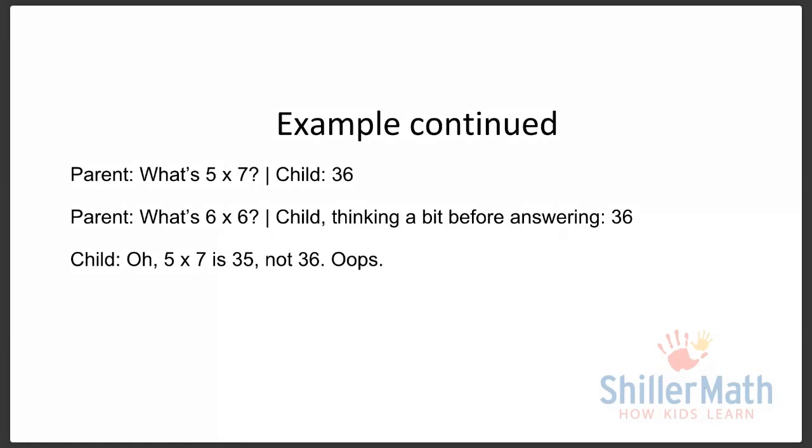So after the child says five times seven is 36, the parent asks, what's six times six, which is a different question whose answer, 36, is the same as the incorrect answer to the previous question.